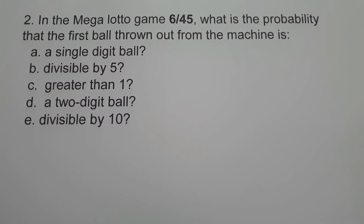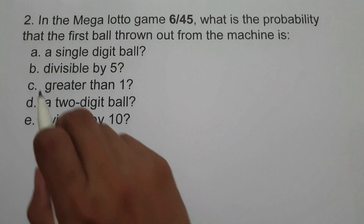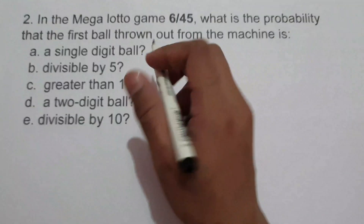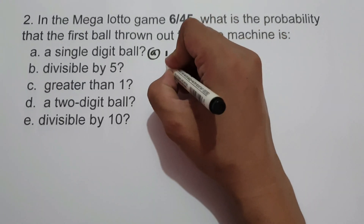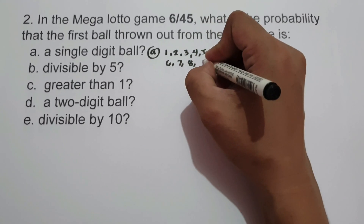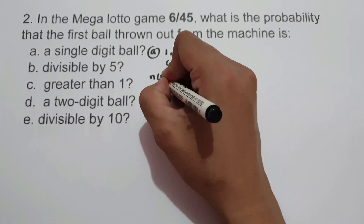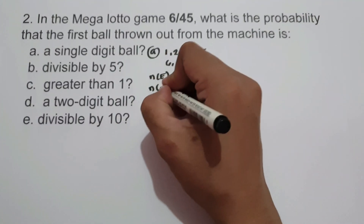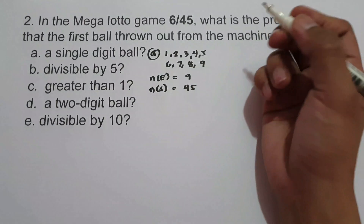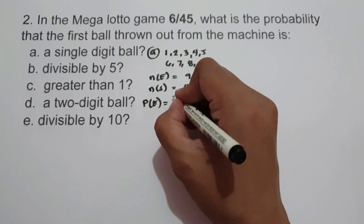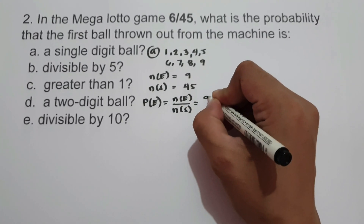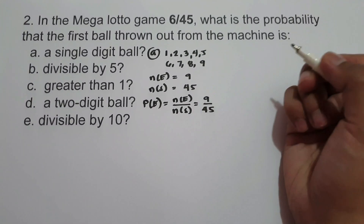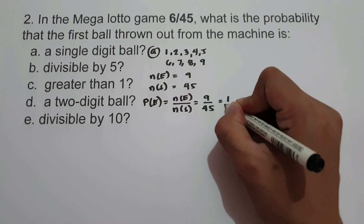On example number 2, in the Megalotto game 6/45, what is the probability that the first ball thrown out from the machine is a single digit ball? Single digits consist of 1 through 9, so the number of favorable outcomes is 9, and the number of possible outcomes is 45. So the probability of an event is 9 over 45. Since 9 over 45 is divisible by 9, we can write our answer as 1 over 5.